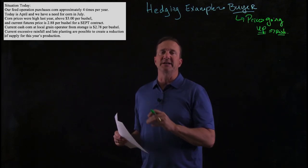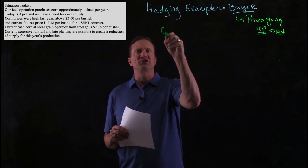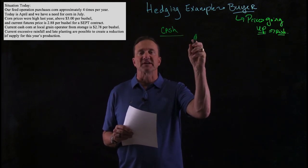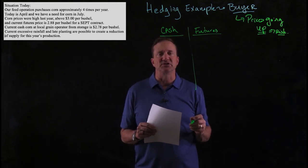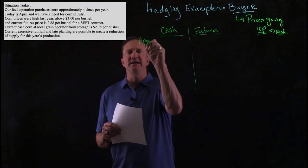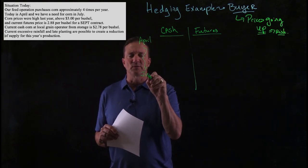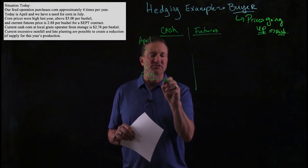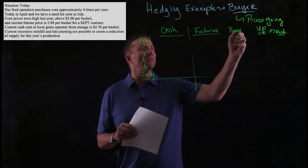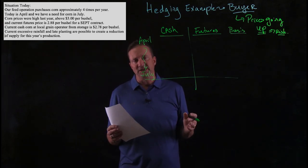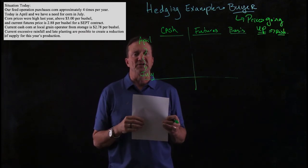Now let's look at how we would take this beginning information and set up a hedge. A hedger is involved in two markets: the cash market and the futures market. I want to set up these two markets and also set up my dates. Today is April — that is the first date — and we have risk all the way until we actually need to buy this corn in July. I'm also going to have a column called the basis. Set up this chart as you take notes — this is what you need.